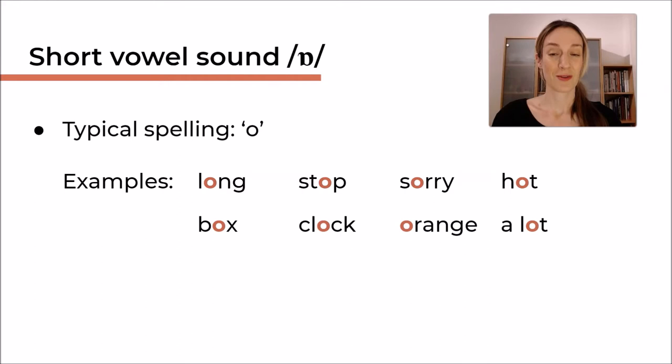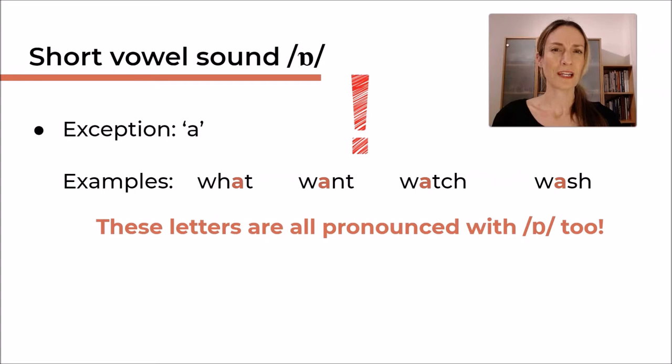So this was fairly easy. There are not many exceptions. We only really have a couple of words where we have an /ɒ/ sound spelled with the letter A instead. But I'm sure you know these words. We have, for example, what, want, watch, and wash. So these are not A sounds. These are all /ɒ/ sounds as well. You might want to go back and just practice the short /ɒ/ once more before we move on to the long /ɔː/ sound. This is a little bit trickier, I'm afraid.